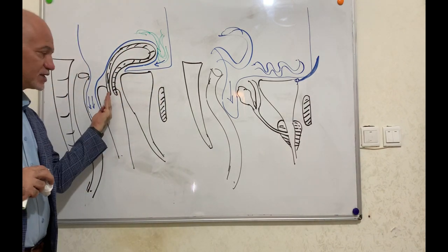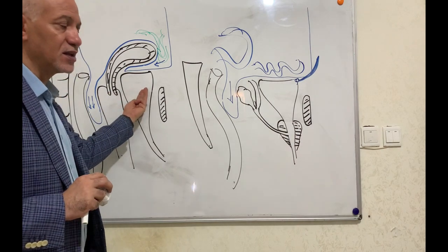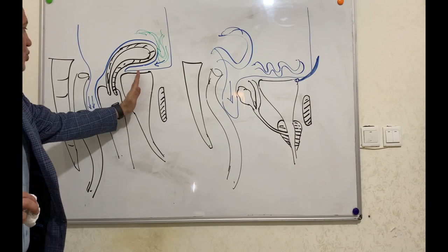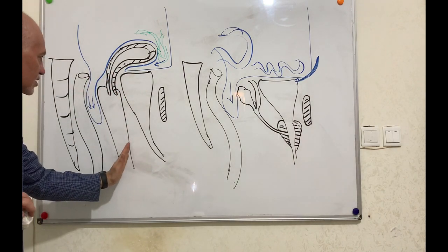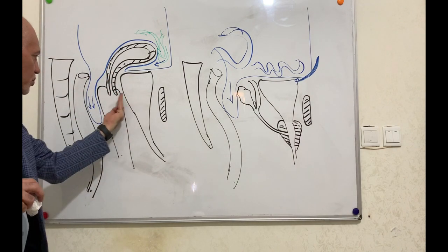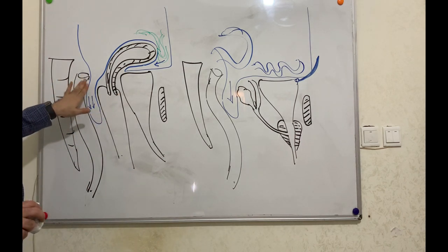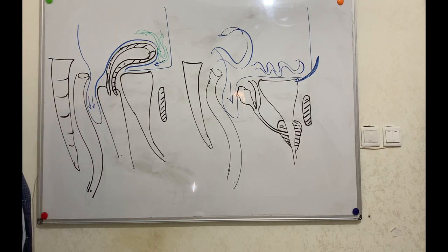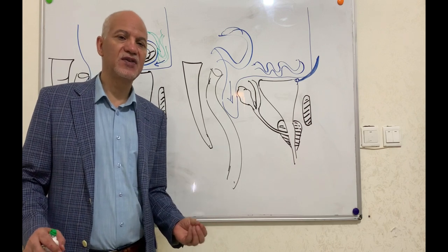The posterior surface of the urinary bladder in female is different from male. It is related to the cervix and the anterior wall of the vagina. More posteriorly, it is related to the rectovaginal pouch and the rectum. These are the relations of the urinary bladder in female.